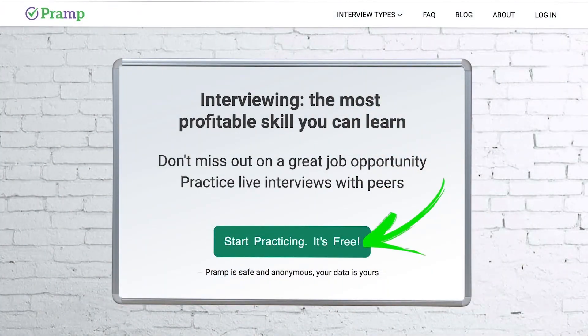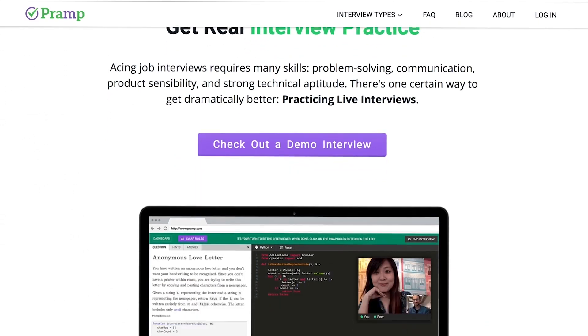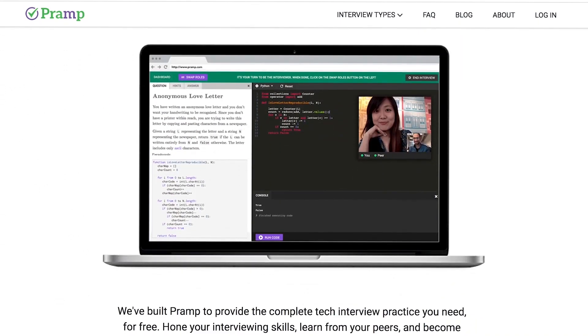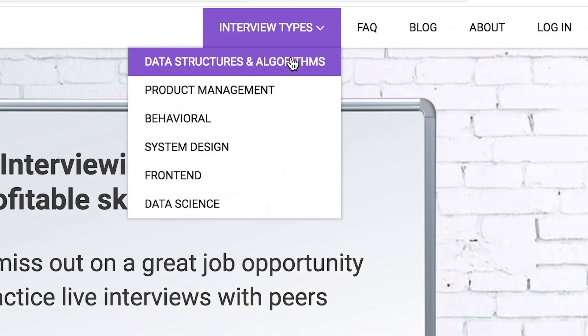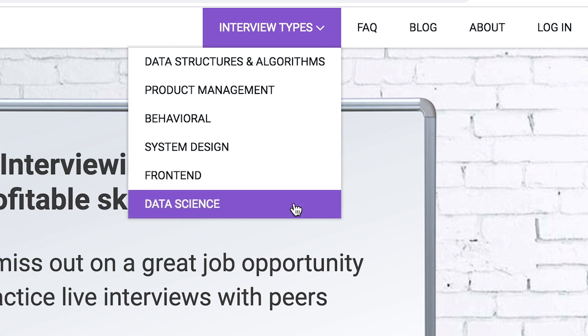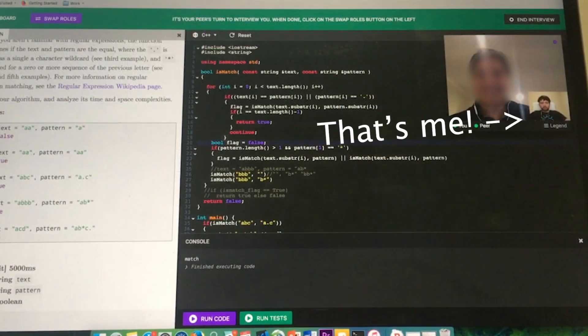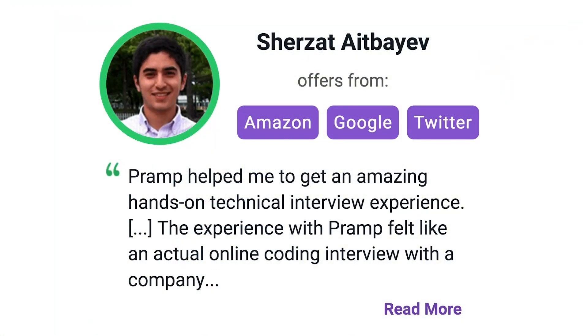Pramp is a free mock interview platform where you can develop your technical interviewing skills. Practice coding with live execution of all major programming languages to solve real interview questions. Interview types include data structures and algorithms, product management, behavioral interviews, system design, front end, and data science. I've personally used this service to successfully crash course for a software engineering interview. Lots of people are having success getting positions at companies like Amazon, Google, Twitter, and more. Check it out. I'll leave a link for you guys in the description.